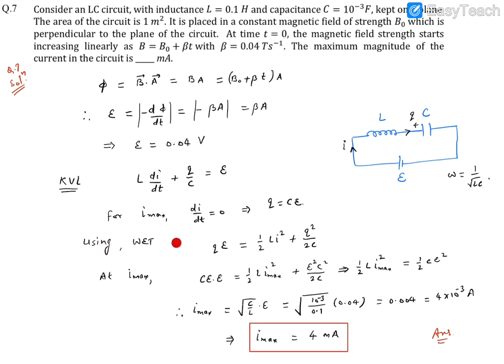Now we can use work-energy theorem. If Q charge has been supplied, the work done by the battery is QE. That work went into the stored energy in the inductor (½Li²) and stored energy in the capacitor (Q²/2C).